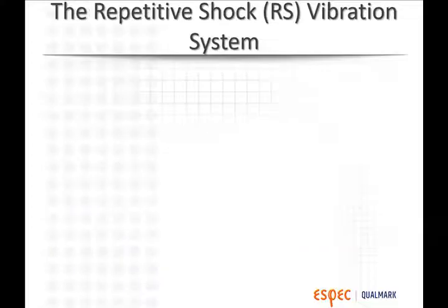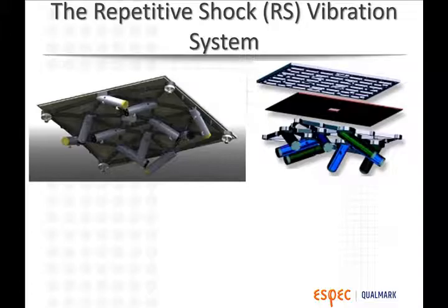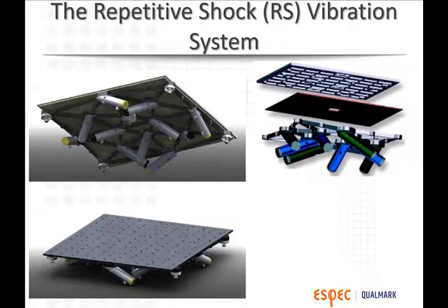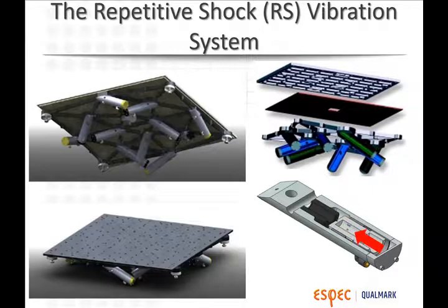In highly accelerated life testing, repetitive shock vibration is used. An RS vibration system consists of a semi-rigid table and understructure with several pneumatic actuators that are mounted to the underside of the table. The table is driven by continuous repeating shocks from these actuators.